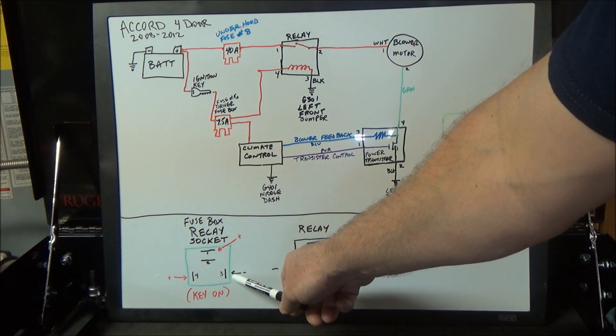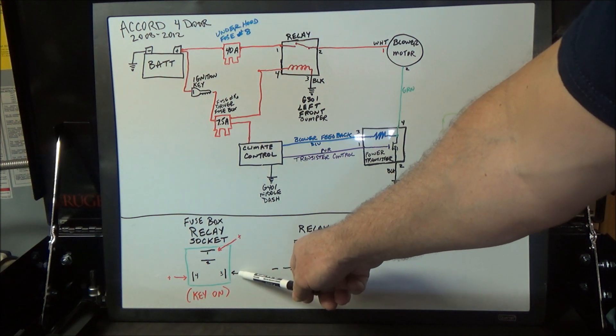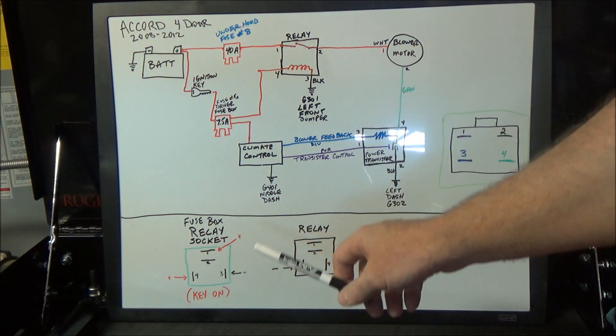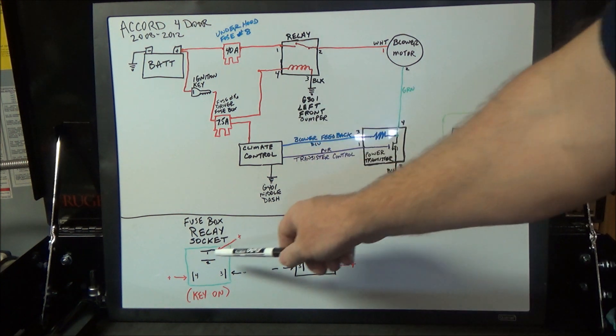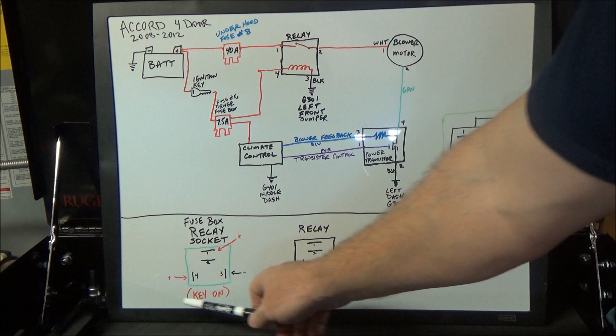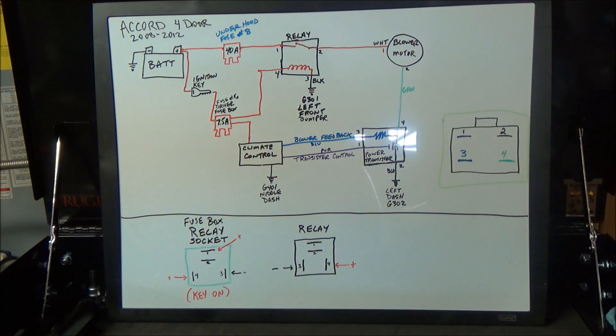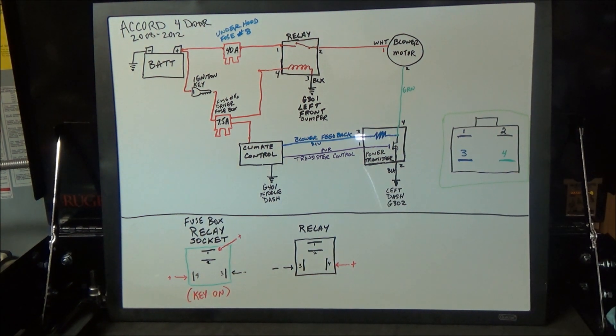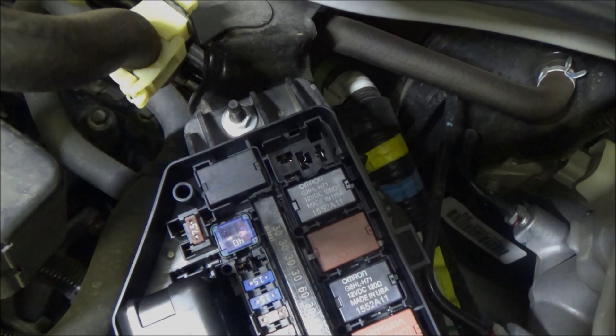Pin four is your control pin, so you need the key on for power to pin four. Once power is supplied and grounded by pin three—that's why you need to check the ground on pin three—that will energize the circuit and complete this circuit. You need to have power on one, power on four, ground on three. I'll show you how to check that right now in the fuse box.